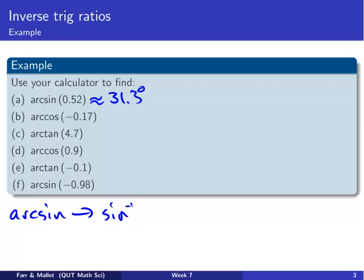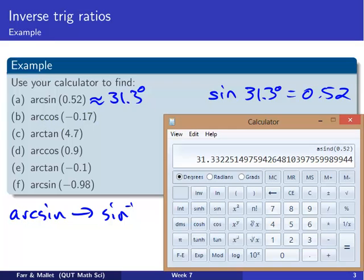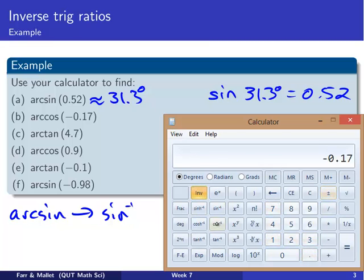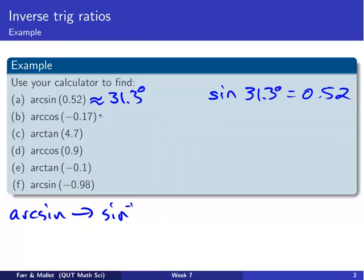This is saying that 31.3 degrees is the angle which has a sine of 0.52 — it's like saying sine of 31.3 degrees is 0.52. It's just the reverse way of writing it; that's how inverse functions work. For the next example, we've got cosine inverse of minus 0.17: 0.17 minus inverse cos gives approximately 99.8 degrees.